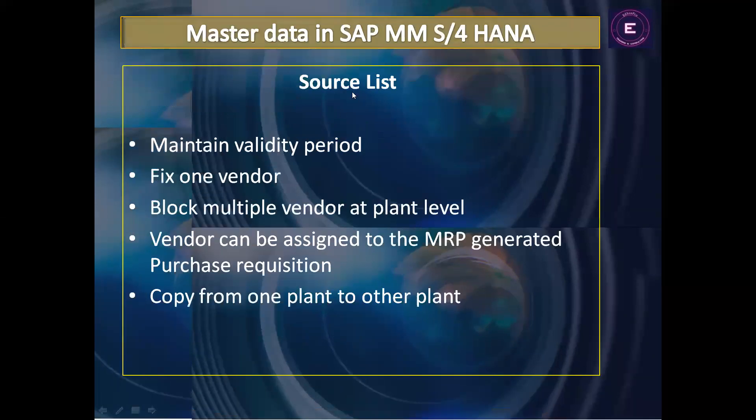Before starting source list, let's talk a bit about info record. In info record, we maintained the combination of a material and a supplier as a record — a record with the combination of material and vendor — for a particular material and a particular vendor.